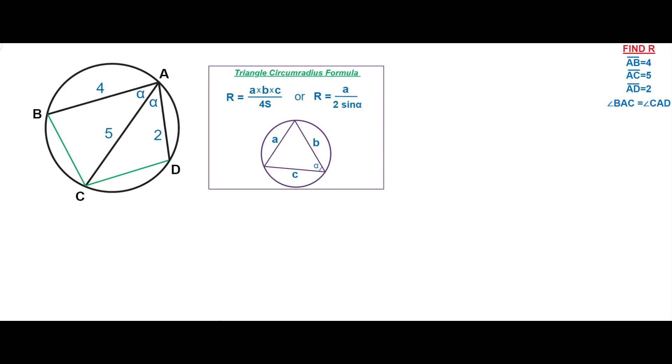So now we know that chords BC and CD are congruent. Let's label them X. Here we have two triangles, triangle ABC and triangle ACD. We can use for both these triangles the law of cosines.